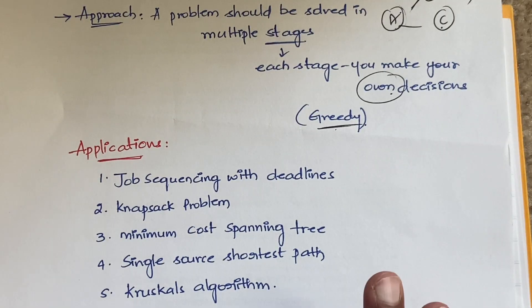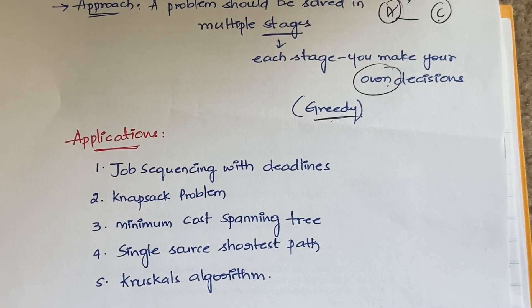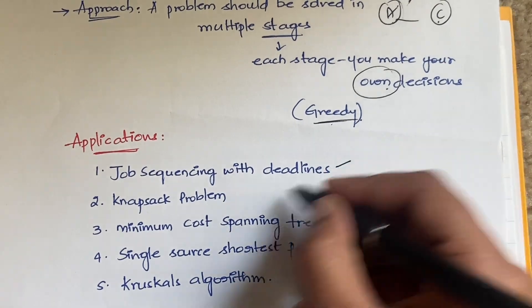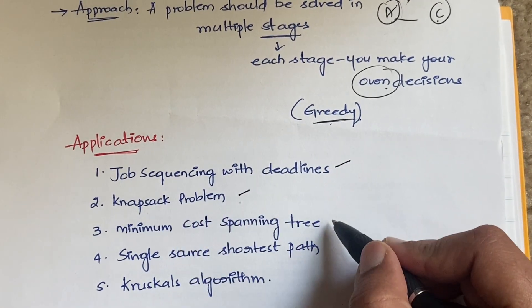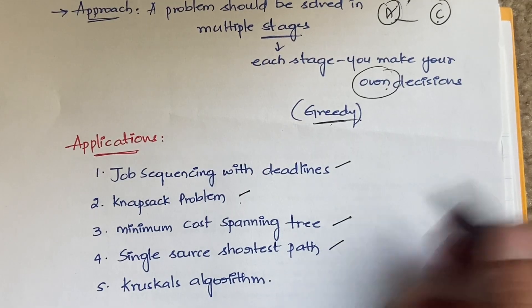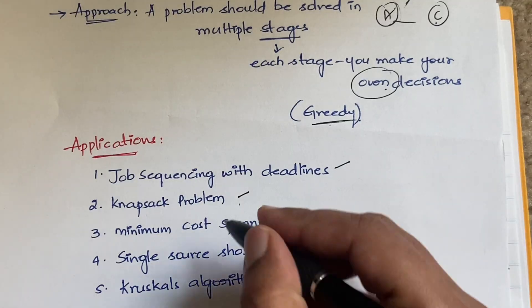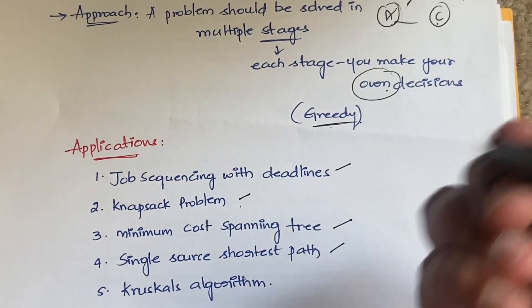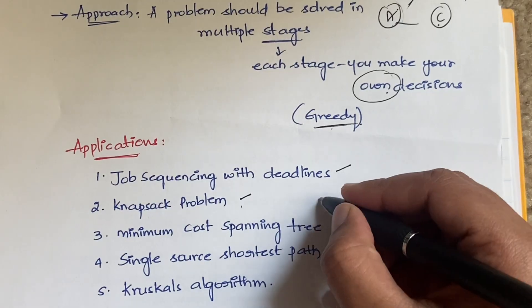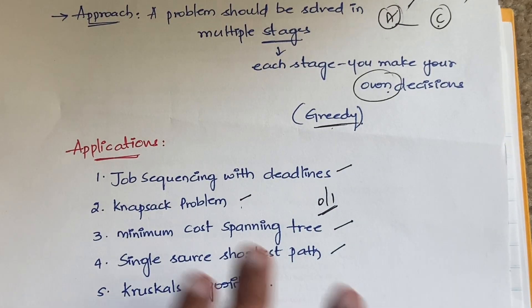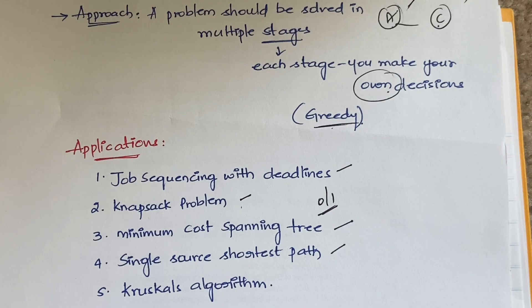Since I follow the JNTU syllabus, we will be learning about job sequencing with deadlines, the knapsack problem, minimum cost spanning tree, and the single source shortest path problem. Kruskal's algorithm is not explicitly mentioned in the syllabus — if time permits I'll try to cover that as well. The knapsack problem has already been seen in dynamic programming and branch and bound, but here you will solve it using the greedy method approach.